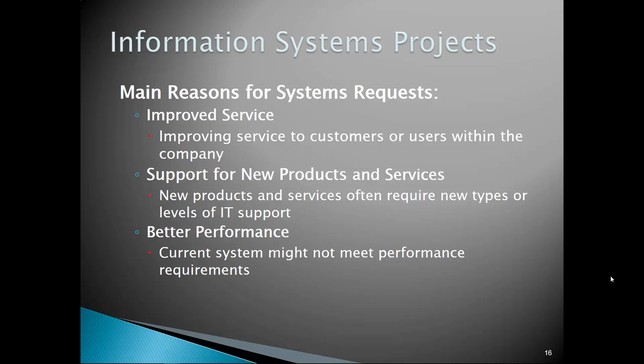The main reasons for systems requests include: improve service, support new products and services, maybe offer a new product line, better performance in manufacturing, and better performance in delivering information to customers. Just imagine the impact of taking five seconds off each transaction at Amazon by doing some different project.